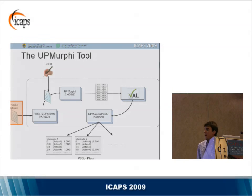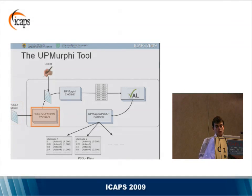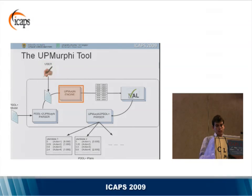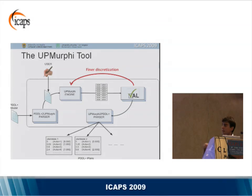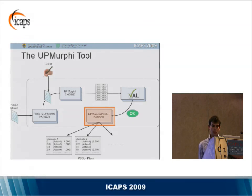This is the architecture of the tool. The user gives as input a PDDL+ model, then the tool translates this model into an APMARFI model — in this phase the user can interact with the tool, for example to add information. Then the generation process starts and produces the table containing state-action pairs. At this point we use the well-known plan validator VAL to validate the generated trajectories. If VAL does not validate our solution we iterate the process using a finer discretization; otherwise we output the plans in PDDL+ syntax.